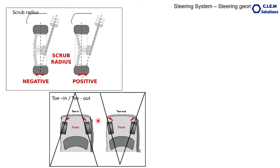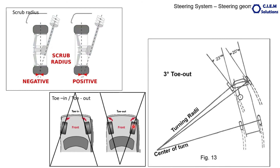The fifth steering geometry parameter is toe in and toe out. When we see from the front, if the two front tyres are facing inward, that is towards the centre line of the vehicle, it is called toe in. If the tyres are away from the centre line of the vehicle at the front side, this is called toe out. What should be maintained — toe in or toe out — depends upon the vehicle design and steering geometry. However, the majority of vehicles maintain toe out.